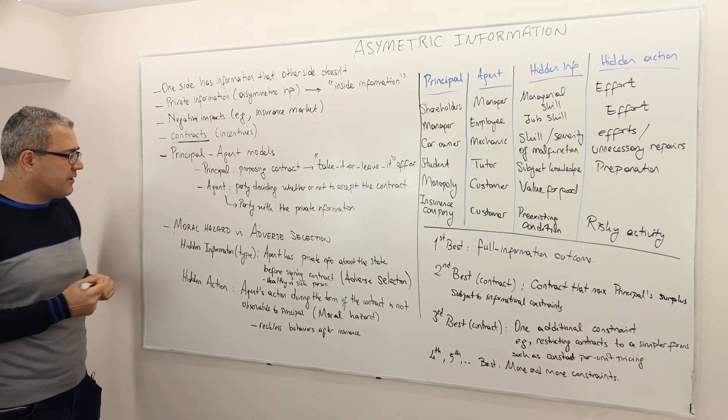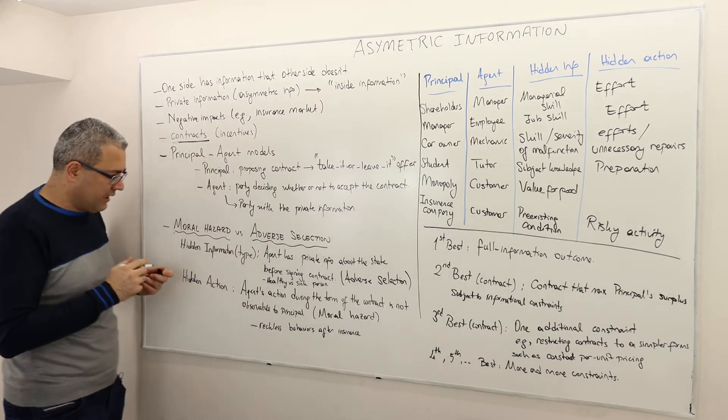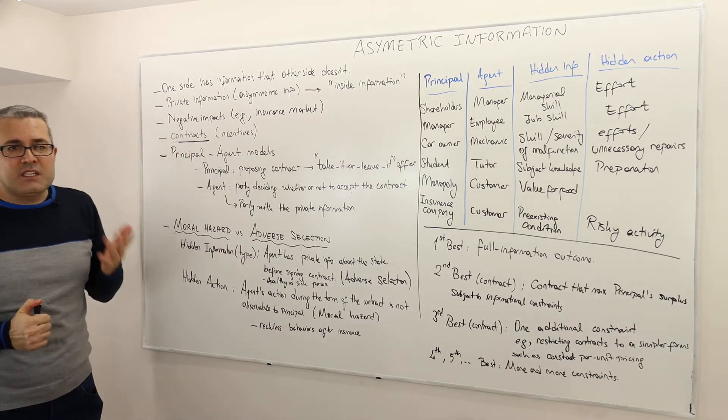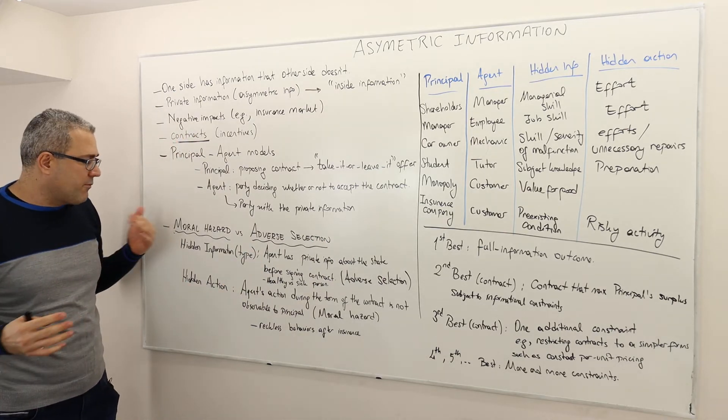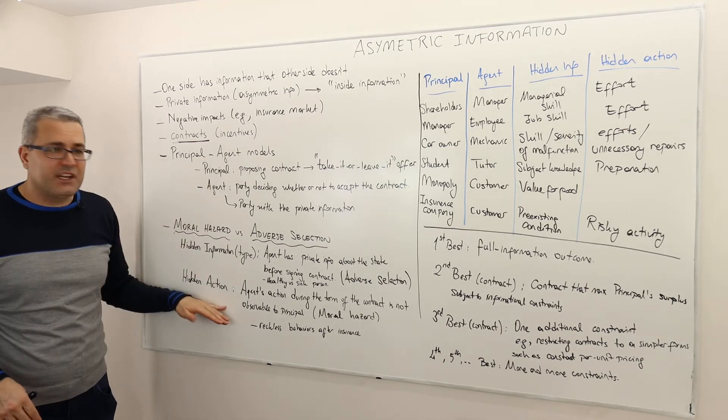Next thing is two concepts that are very important: moral hazard and adverse selection. Some textbooks and some of us call them instead hidden information or hidden type versus hidden action.